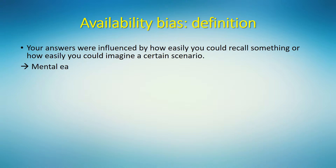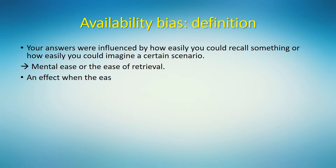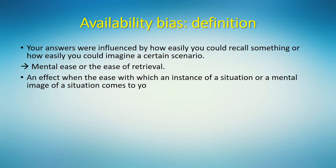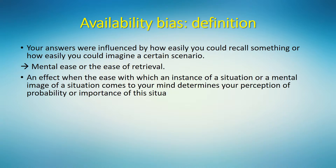In these two little experiments, your answers were influenced by how easily you could recall something, or how easily you could imagine a certain scenario. We call this mental ease, or the ease of retrieval. This mental ease, with which an instance of a situation or a mental image of a situation comes to your mind, determines your perception of the probability or importance of that situation. In other words, things that you can recall, give examples of, or easily imagine are unconsciously perceived as more probable and more important. And this unconscious mental shortcut often leads us into an error.